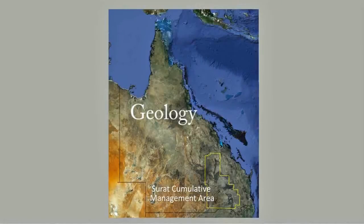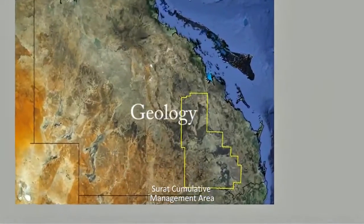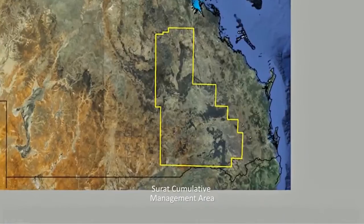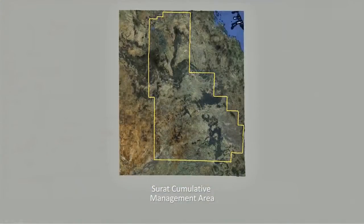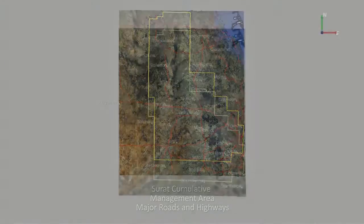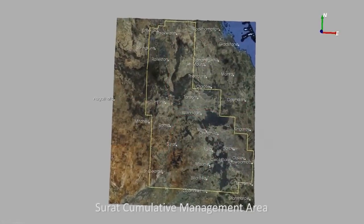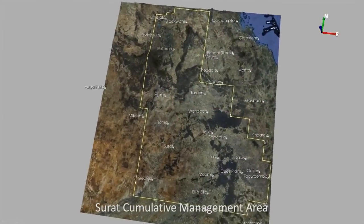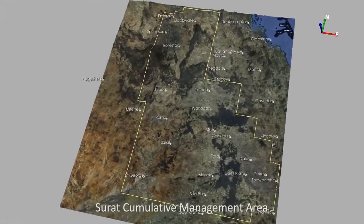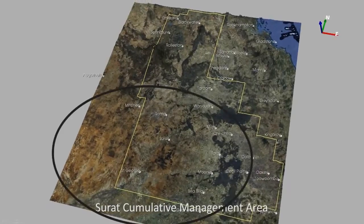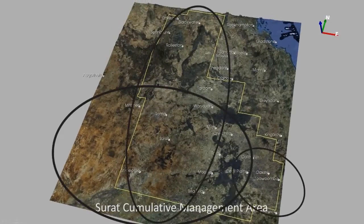This short video presents a three-dimensional view of the geology in the Surratt Cumulative Management Area. This geological information is used to inform modelling processes. The Surratt Cumulative Management Area covers extensive coal seam gas development in the Surratt, Southern Bowen and Clarence Morton basins.